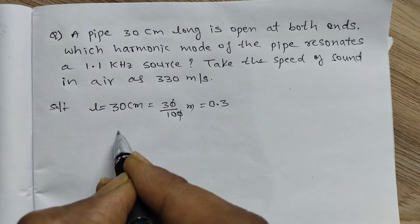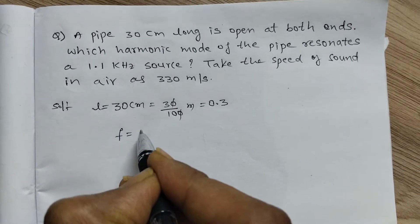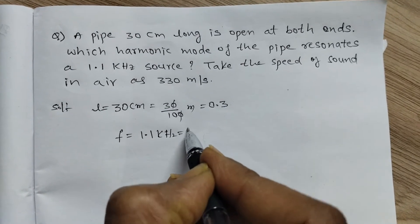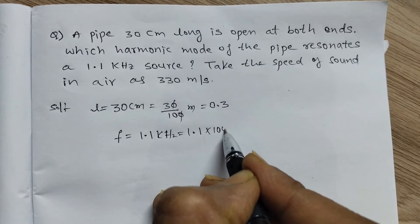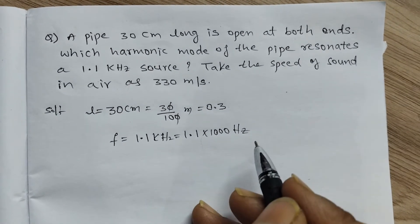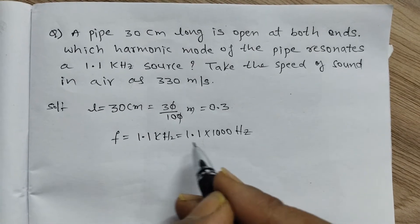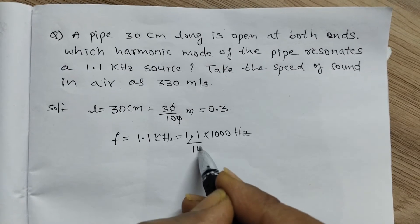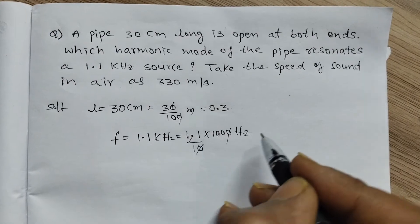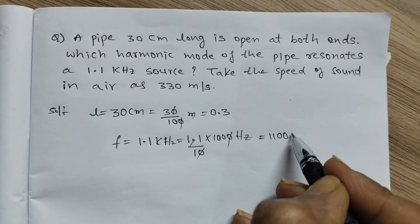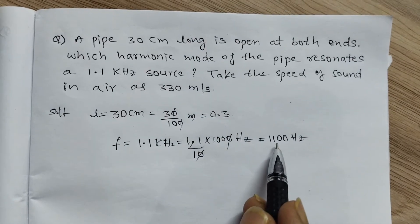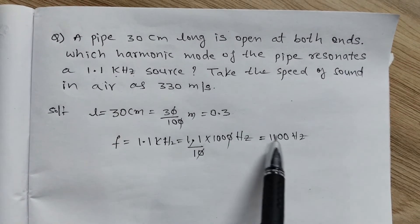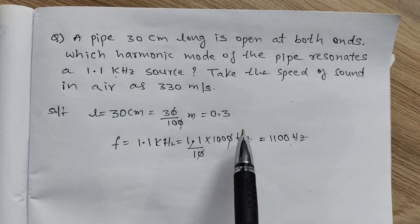Next, frequency: 1.1 kilohertz. One kilohertz equals 1000 hertz, so changing kilohertz into hertz: 1.1 times 1000 equals 1100 hertz. The frequency we changed from 1.1 kilohertz into 1100 hertz.